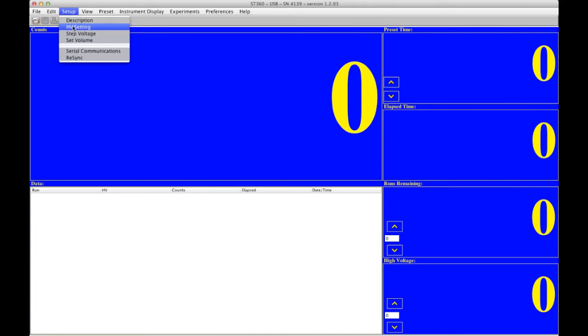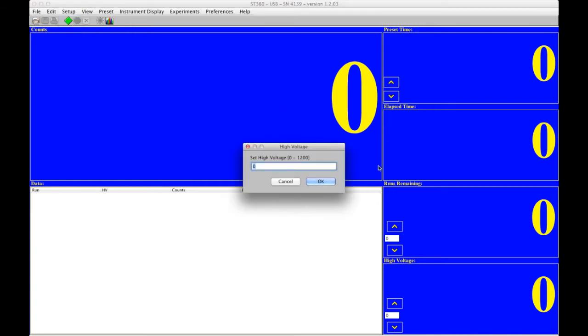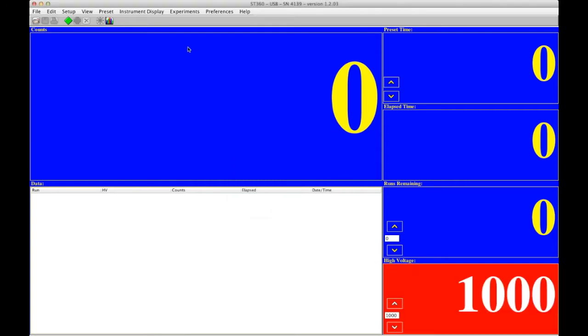Now, HV setting. Always want to make sure this is at zero when we connect and disconnect probes for safety reasons. Also, we don't want to damage the probe. We know this to be set at 1,000 as before. Set that at 1,000. You can see that in the right-hand corner displayed.